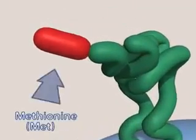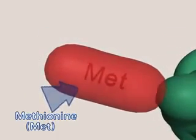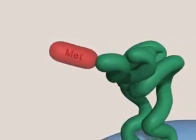Attached to the end of the tRNA is the corresponding amino acid. Methionine corresponds to the AUG codon.